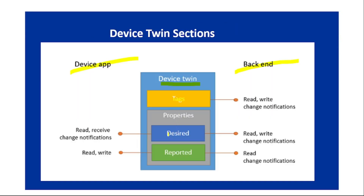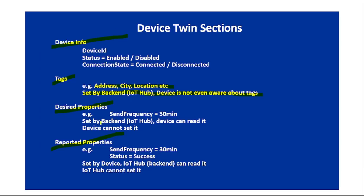Next is desired properties. The backend can write and read desired properties, but the IoT device can only read them. For example, the IoT app can set a desired property like send frequency equal to 30 minutes, meaning it expects the IoT device to send telemetry every 30 minutes. The device cannot set desired properties.